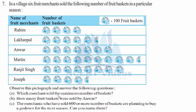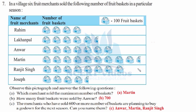Part A: which merchant sold the maximum number of baskets? Clearly visible from the pictograph, Martin has the maximum number of pictures, so Martin sold the maximum number of fruit baskets. Part B: how many fruit baskets were sold by Anworth? Count the pictures for Anworth: 1, 2, 3, 4, 5, 6, 7 — and 7 × 100 = 700. So Anworth sold 700 baskets.